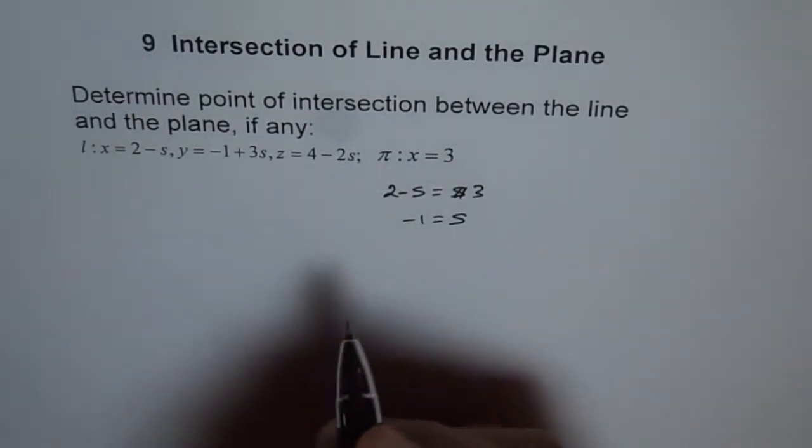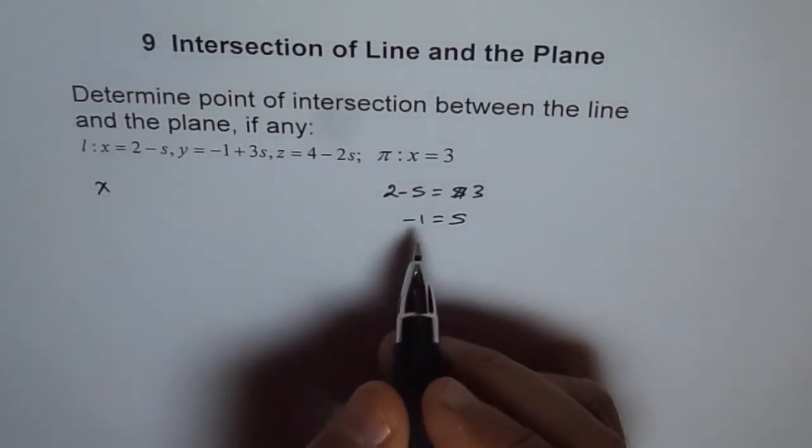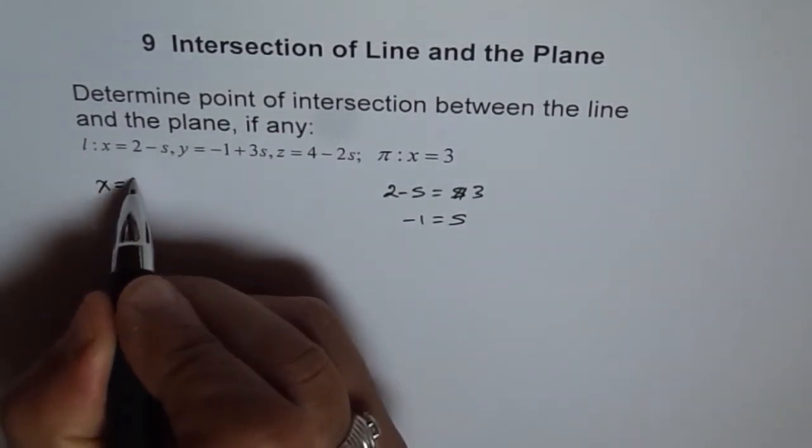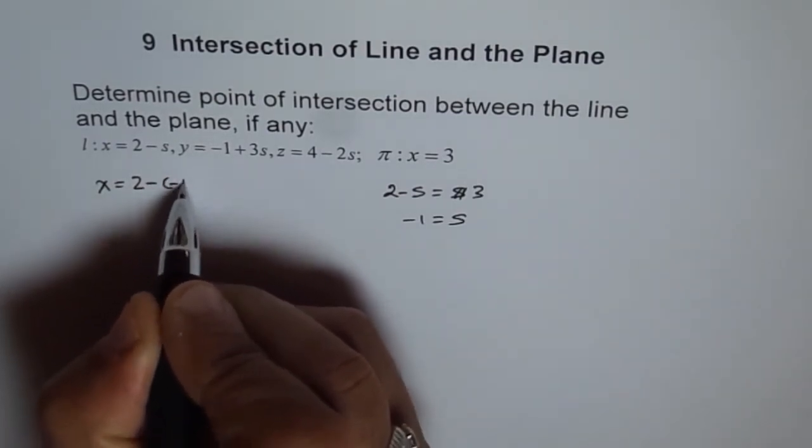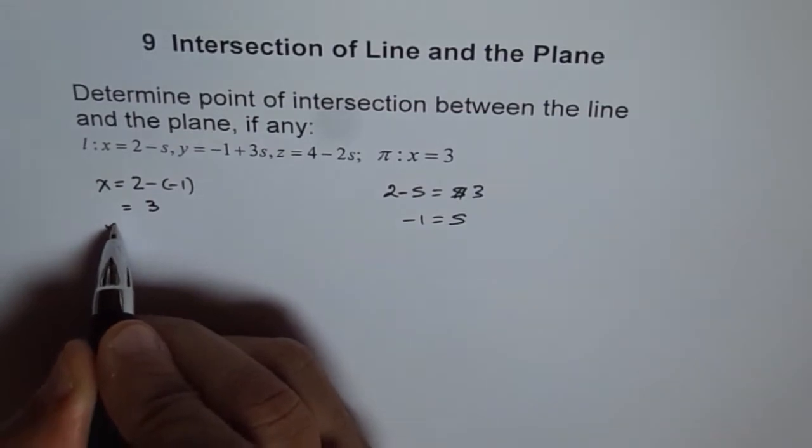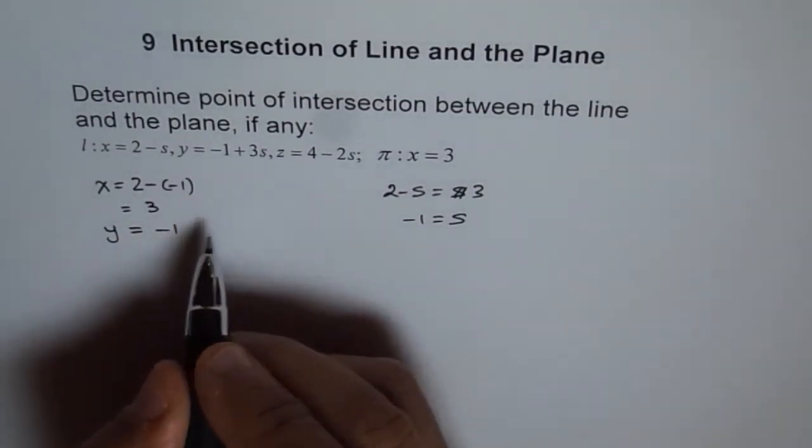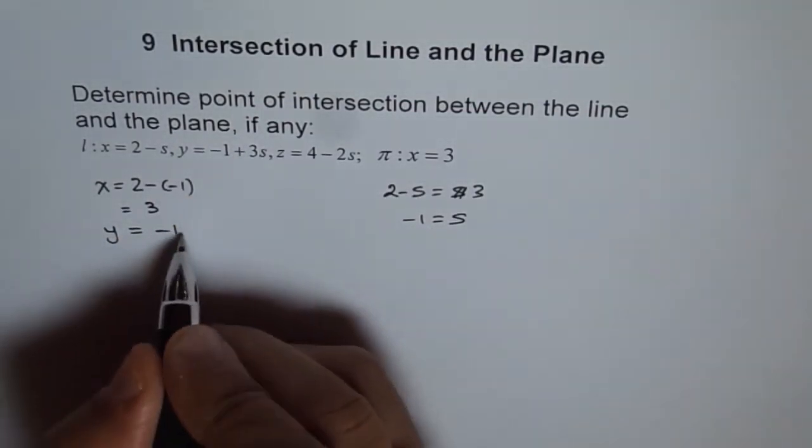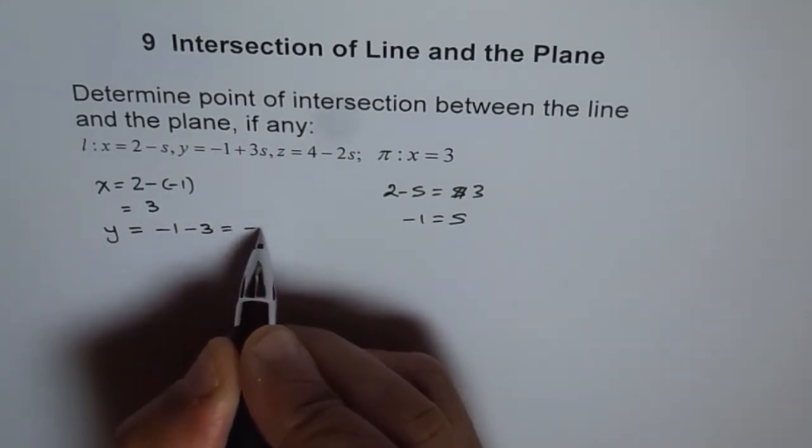The points are: x equals 2 minus of minus 1, which is 3 of course. And for y, we get minus 1 plus 3 times minus 1, which is minus 3, which is minus 4.